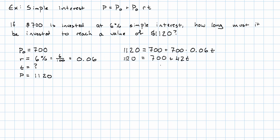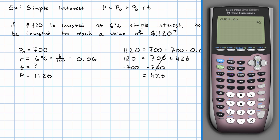Now, to solve this equation, I need to get rid of the constant term on the side with the variable. So, 1,120 minus 700 is 420.